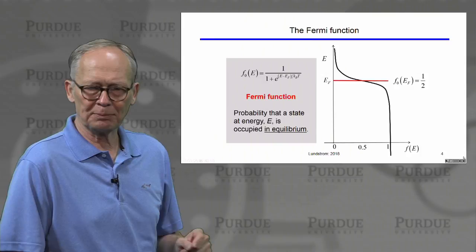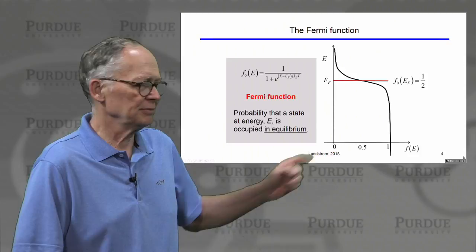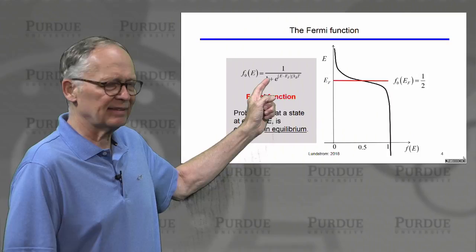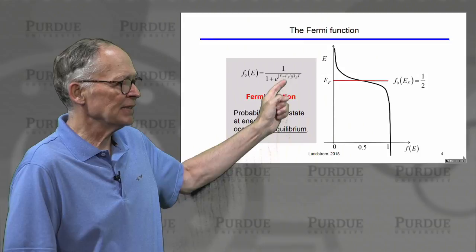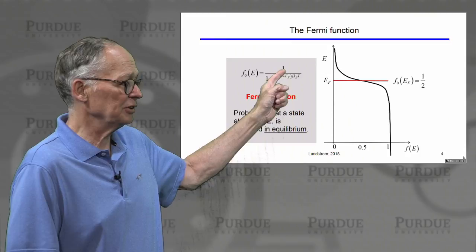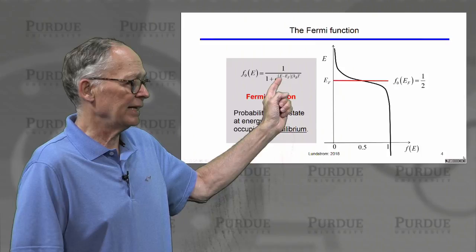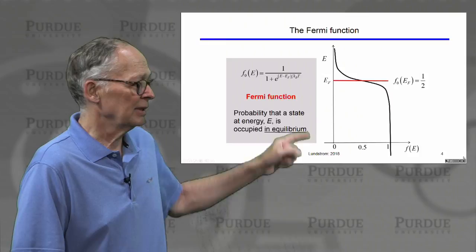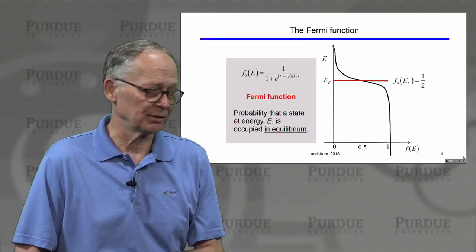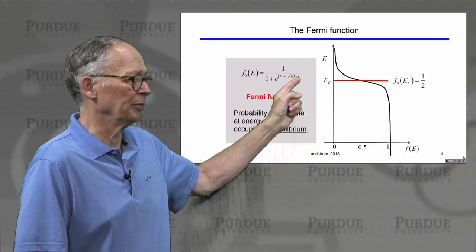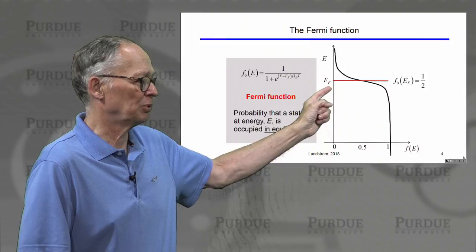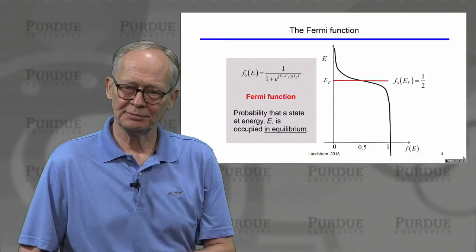Let's get comfortable with the Fermi function. If I plot the Fermi function versus energy — it goes between zero and one, the probability that a state is occupied — at very low energies much lower than the Fermi energy, E to the minus a large number is close to zero, so the probability approaches one. At energies way above the Fermi energy, I have one over a very large number, so the probability goes to zero. At the Fermi energy itself, it's one plus e to the zero, which is two, so the probability that a state at the Fermi energy is occupied is one half.